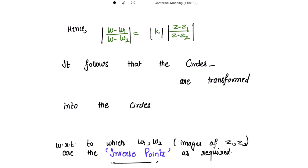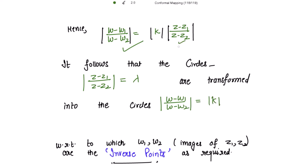It follows that the circles |z − z1|/|z − z2| = λ are transformed into the circles |w − w1|/|w − w2| = |k|λ, writing this as a new lambda. So the circles are transformed into circles with respect to which w1 and w2 — the images of z1 and z2 — are the inverse points, as required. We have thus proved that every bilinear transformation transforms circles or straight lines into circles or straight lines, and inverse points into inverse points.